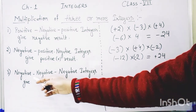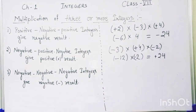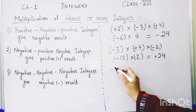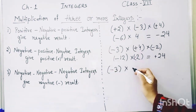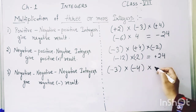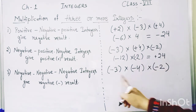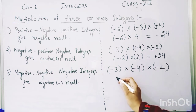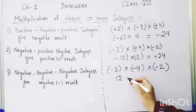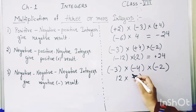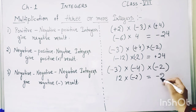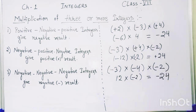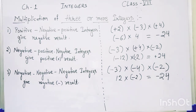Now coming to the third rule: all three integers are negative. If all three integers are negatively charged, then their product will always give a negative result. Taking the example: minus three, minus four, and minus two. Solving the first two — minus three and minus four — gives plus 12, and multiplying by minus two gives minus 24. So these are the rules for multiplication of two or more integers.